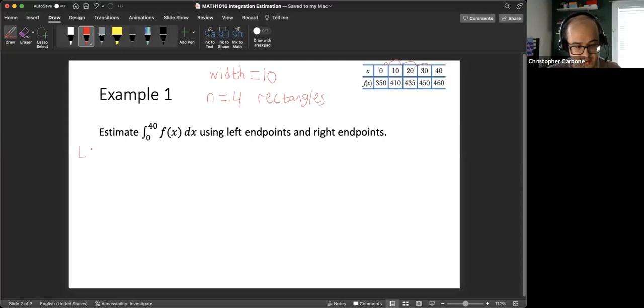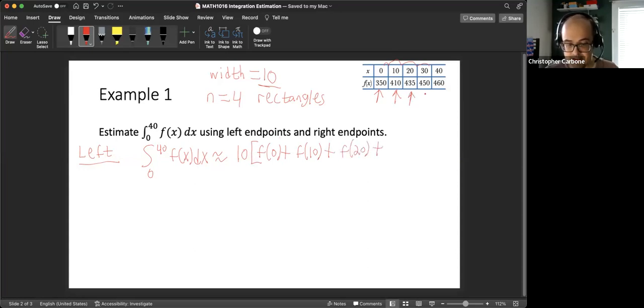So let's start with the left endpoints. So this integral from 0 to 40 of f(x) dx can be approximated by taking our width here of 10 times, starting with the left, we would start here at the 0 value. So f(0) plus the next one would be f(10) plus the next one is the value of 20. So f(20) plus the last one would be this f(30) for that 30 value for the function.